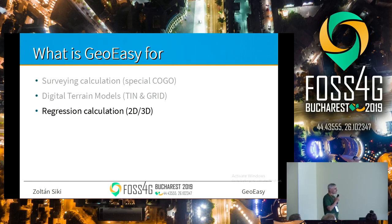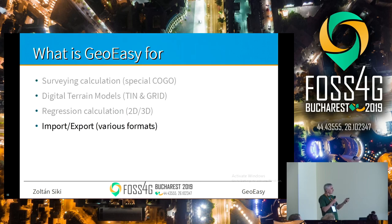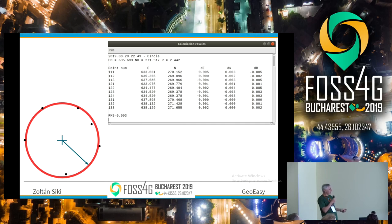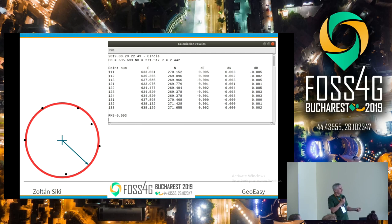There is a third branch in the software called regression calculation. It's not too near to GIS - it means we have some points and we would like to find the best fitting line, curve, sphere, or plane. For example, we have some points and find the circle where the sum of squares of distances from the circle is minimal. We usually get alphanumerical feedback about the calculation, and differences in radius direction from the circle.